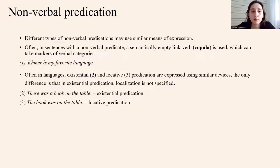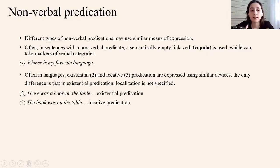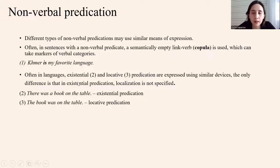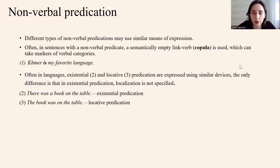Often in languages, existential and locative predication are expressed using similar devices, and the only difference is that in existential predication, localization is not specified. For example, 'there was a book on the table' is existential predication, and 'the book was on the table' is locative predication.